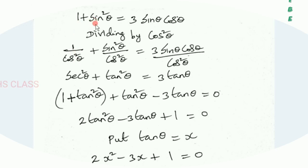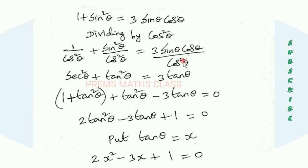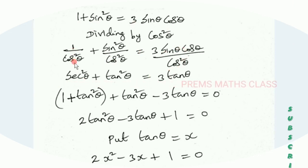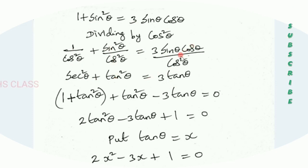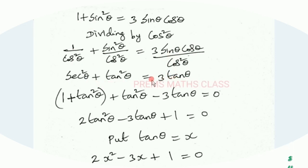We get 1 by cos squared theta plus sin squared theta by cos squared theta equal to 3 sin theta cos theta divided by cos squared theta. Now 1 by cos squared theta is sec squared theta, plus sin squared theta by cos squared theta is tan squared theta, equal to 3 times sin theta by cos theta, which is 3 tan theta.